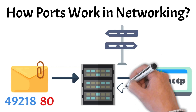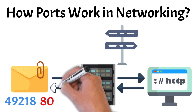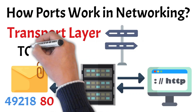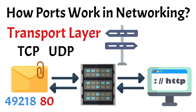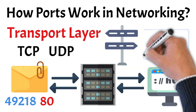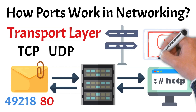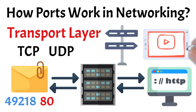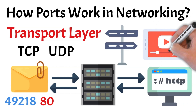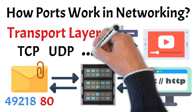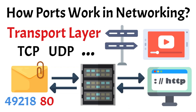Ports function at layer 4 of the OSI model — the transport layer — working with TCP and UDP to control data flow. If you're not familiar with the OSI model, we have a video explaining it. You can also check out our video on network protocols to learn more about TCP, UDP, and other network protocols.